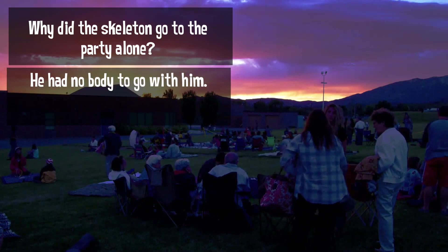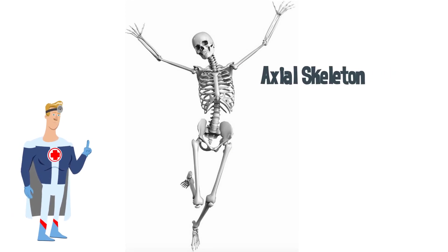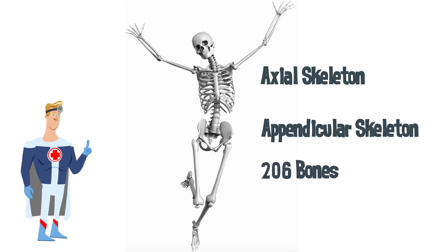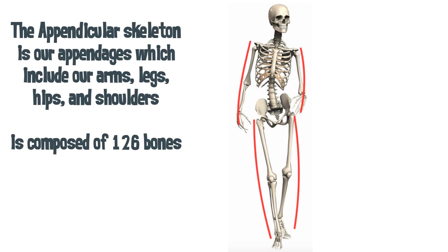The skeleton can be divided into two main sections: the axial and the appendicular. Combined, our body has 206 bones. The axial skeleton is our core skeleton and it protects organs of the body, composed of 80 bones. The appendicular skeleton contains 126 bones — it is your appendages, arms and legs, as well as the hip and shoulder girdles.